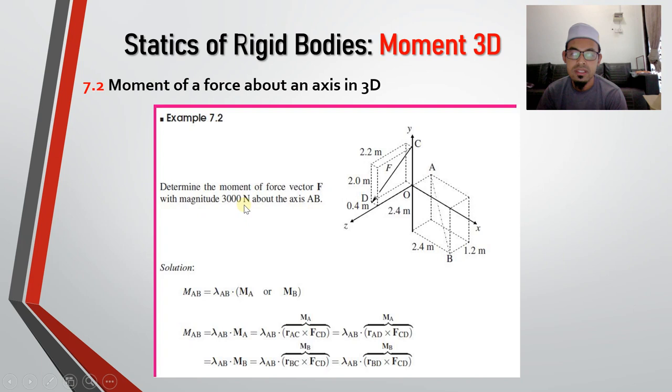Okay, look at this example. Determine the moment of force vector F with magnitude 3000 Newton about the axis AB. So AB means that from A to B. So what is our moment about axis AB? We have, back to our formula, we have lambda AB dot with MA or MB. You can either choose from moment about point A or moment about point B.